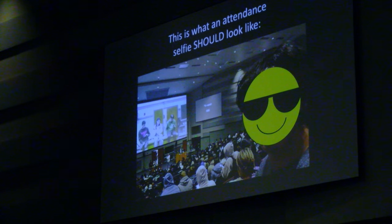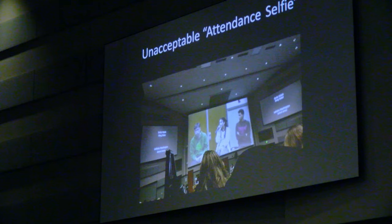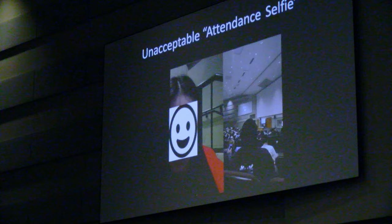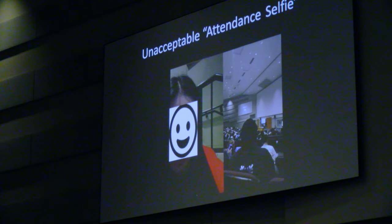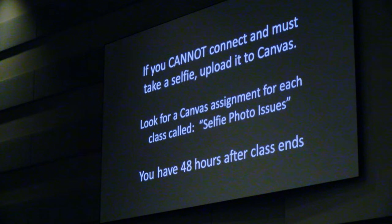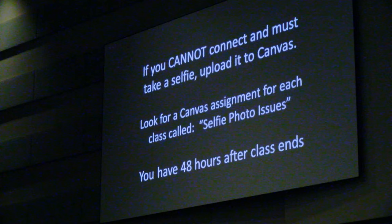If you can't get on Canvas, just get your phone out and take a selfie — make it look like this, not a Snapchat-style split shot. You have to take a proper selfie and then upload it to what you'll see on Canvas — it's called 'Selfie Photo Issues.' Pick the one for today's date and dump that selfie in there. That will be your attempt — we'll know you were here for the first or second quiz.